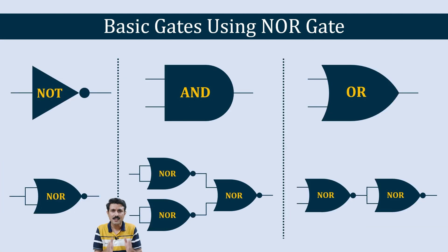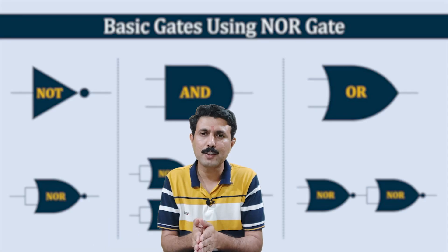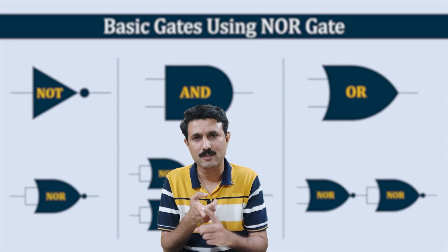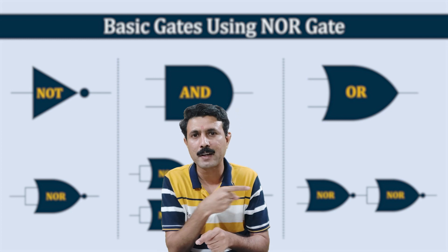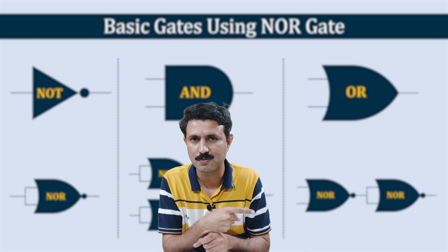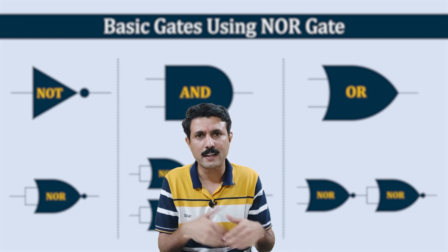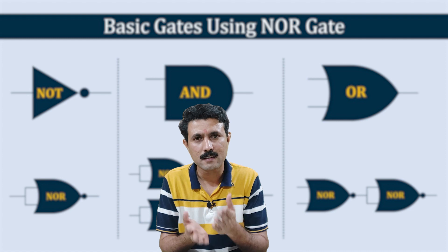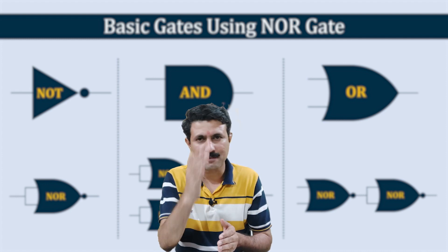These are all the basic gates — NOT, AND, and OR — which we have created using NOR gate. Now we are going to explore XOR and XNOR gates. I recommend you to watch the next video where we will create XOR and XNOR gates using NOR gate.